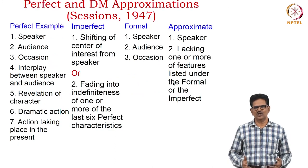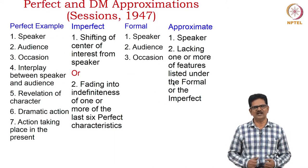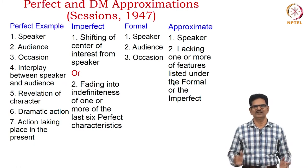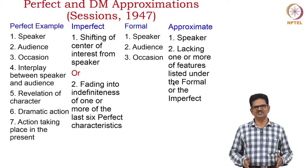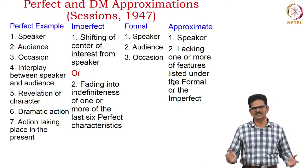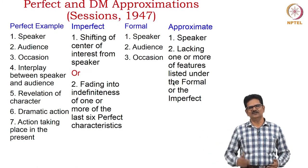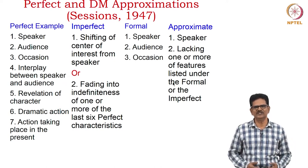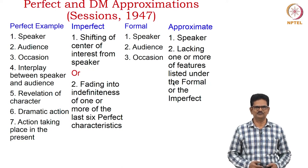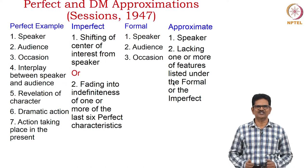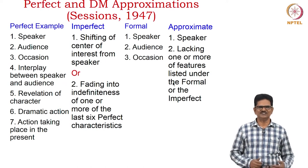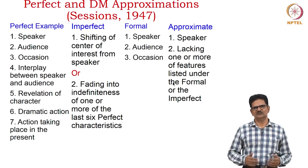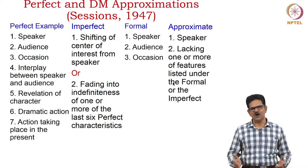The dramatic monologue is the most important poetic form to understand in Victorian poetry. A critic called Sessions wrote an article on the dramatic monologue in 1947 and identified seven features of a perfect dramatic monologue. In decreasing order, certain qualities may be missing in some forms. The seven features are: speaker, audience, occasion, interplay or interaction between the speaker and the audience, revelation of character, dramatic action, and action taking place in the present. These are the features we will find in a perfect example of a dramatic monologue.